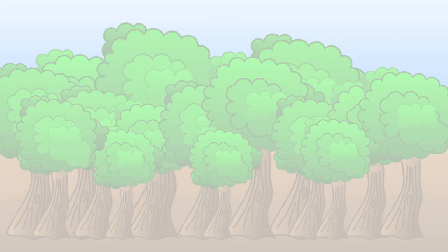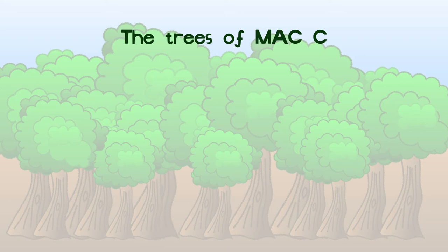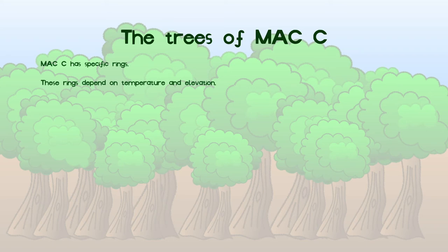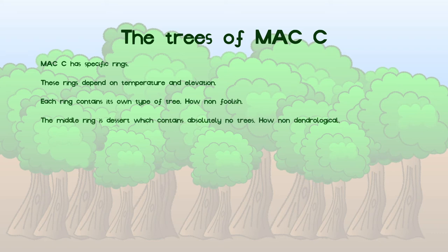Back to trees. This slide is on the trees of Maxi. Maxi is an excellent planet with rings of biomes. The rings depend on the temperature and therefore how far north and south they are, and also the elevation. The highest points are the poles which are 500 meters above sea level and are topped by a further 300 meters of ice cap, making the poles 800 meters above sea level and the highest and coldest points. How easy to remember. Each ring is a different biome and so contains a different tree type. The center ring is surrounded by ocean and is on the equator. It is desert, meaning there are no trees. The rings on the other side of the oceans are savannah. These contain umbrella thorn acacia trees. This is incredibly excellent.